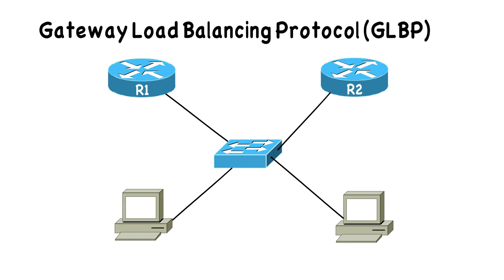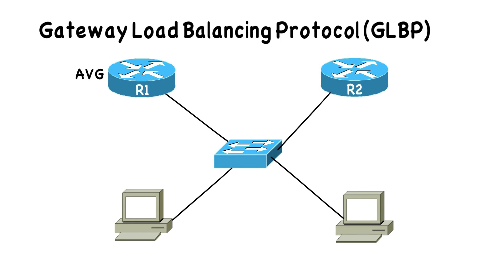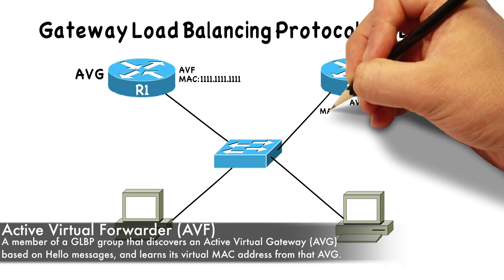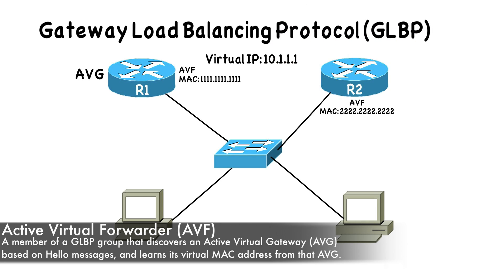A couple of terms we need to know when talking about GLBP. We're going to have one router that's the Active Virtual Gateway, or AVG. The AVG is going to respond to ARP requests coming in from hosts. When a host asks for the MAC address for, say, 10.1.1.1 — our virtual IP address — the Active Virtual Gateway responds with the MAC address corresponding to an AVF, an Active Virtual Forwarder, which does the job of actually forwarding traffic off of the local subnet.